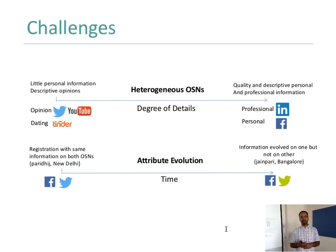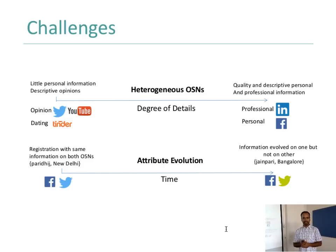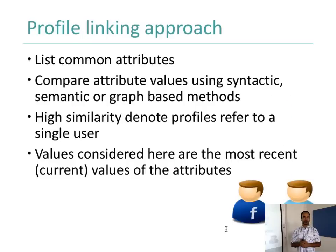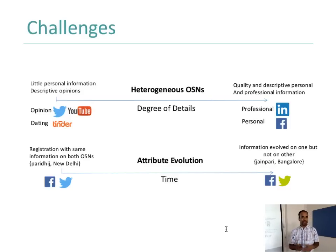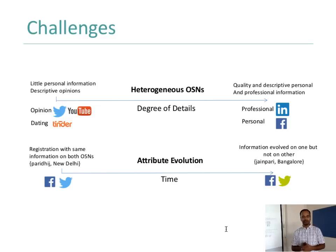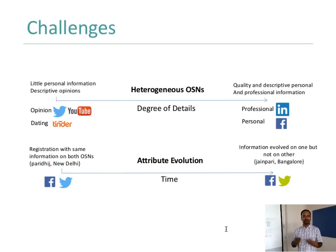A technical challenge for putting them together is that some networks provide more personal details, while in some they are not as personal. For example, YouTube being a video sharing service gives you opinions and what kinds of videos people watch; Tinder, the dating site, has a little personal information; LinkedIn is professional and Facebook also has personal details. The question is: what information can you collect from these different social networks, how do you put them together, and answer whether multiple handles are the same or different.